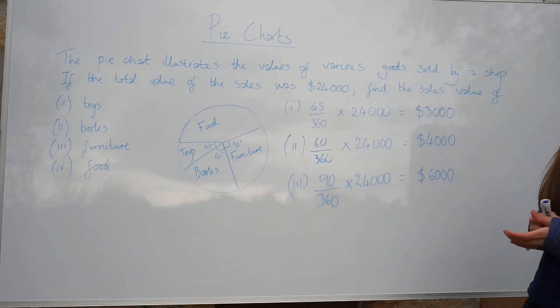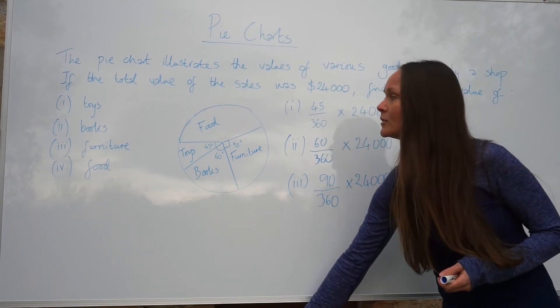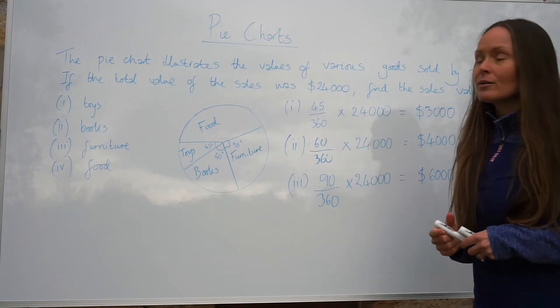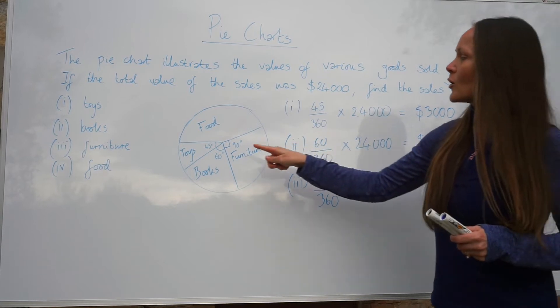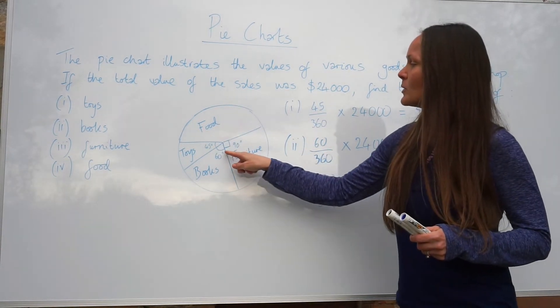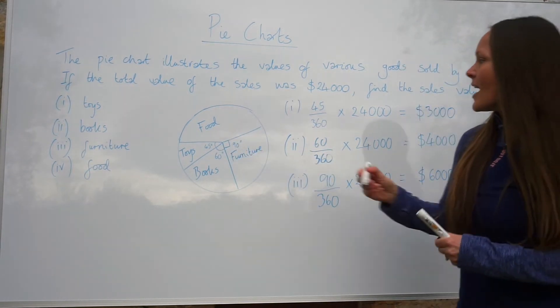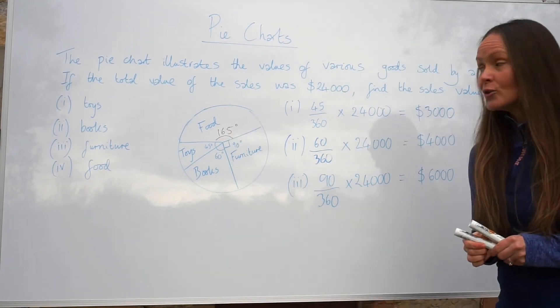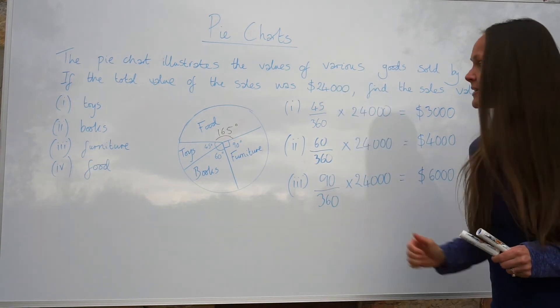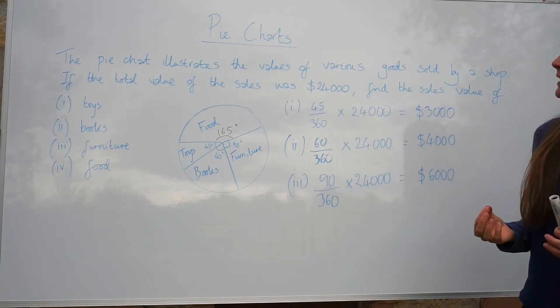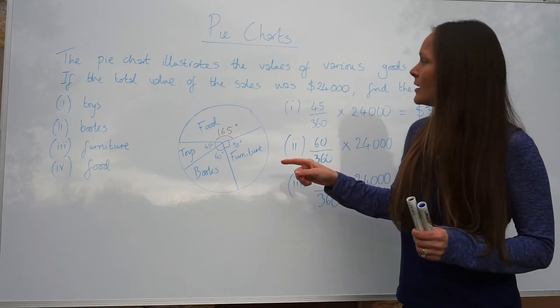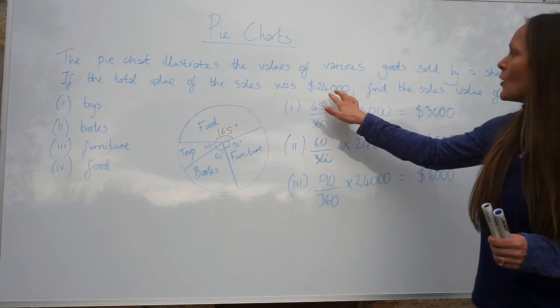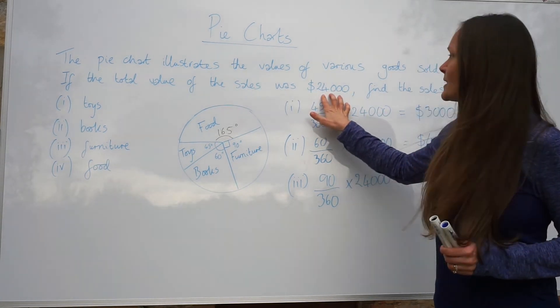So for the last part, food, we haven't been given the number of degrees. You can either work out the number of degrees, so subtract these three numbers from 360, and it gives you 165. And then you can use the exact same method that we did there. Alternatively, you could subtract 3,000, 4,000, and 6,000 from the total amount, 24,000.